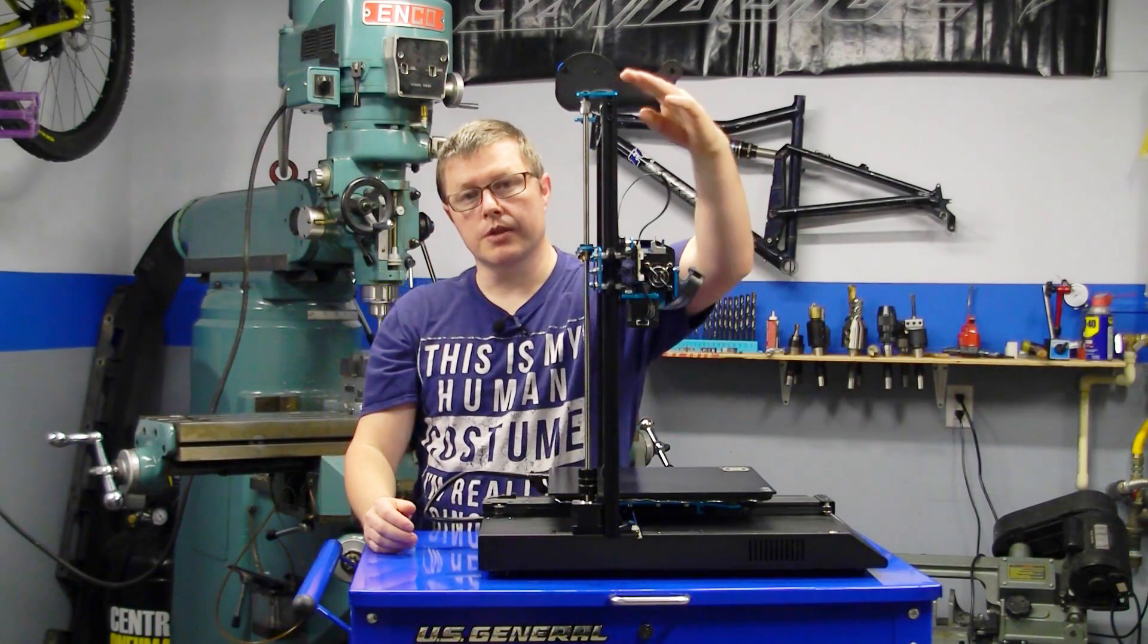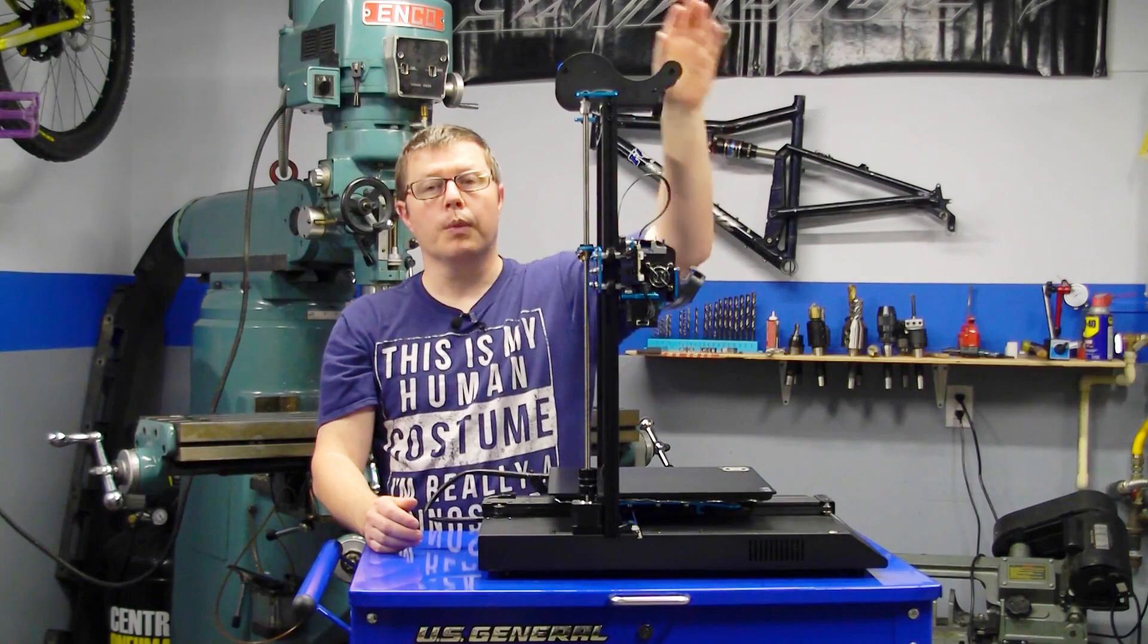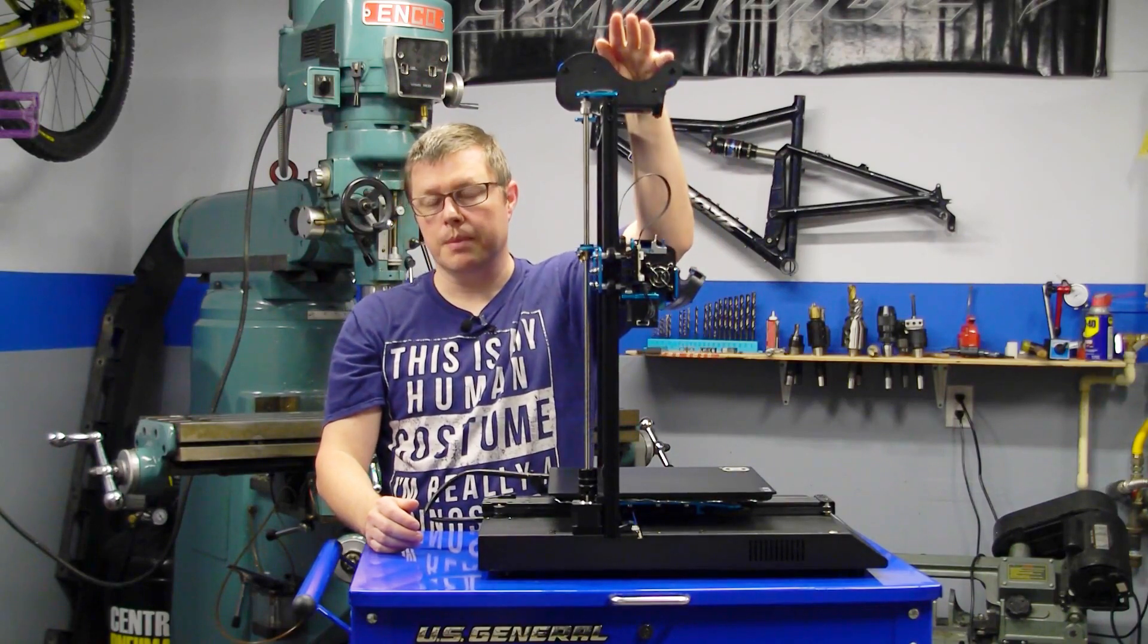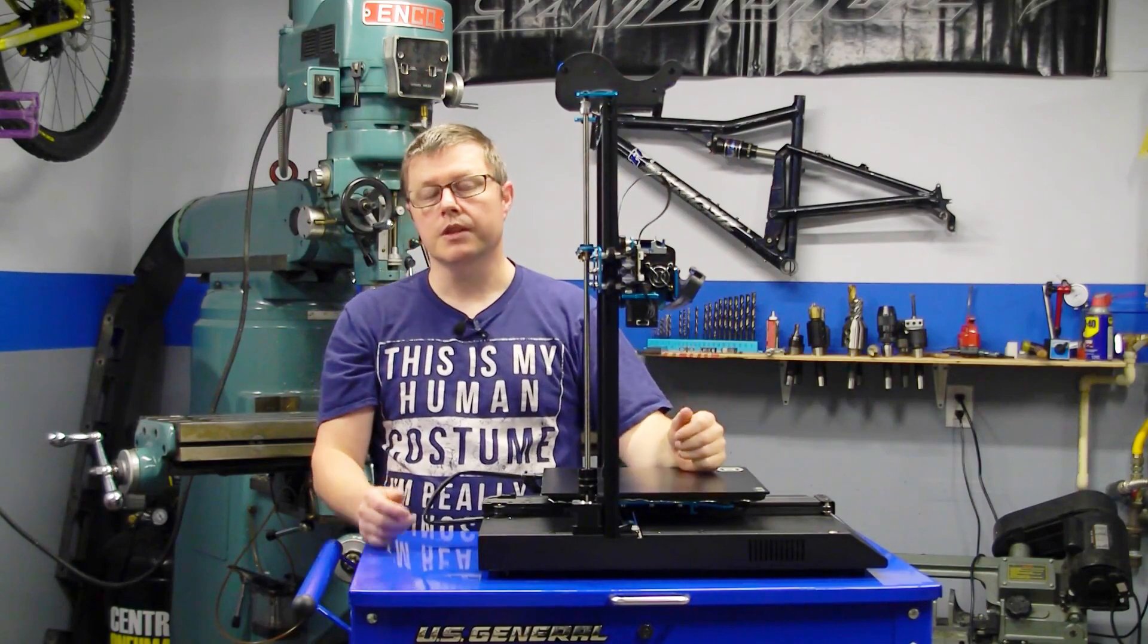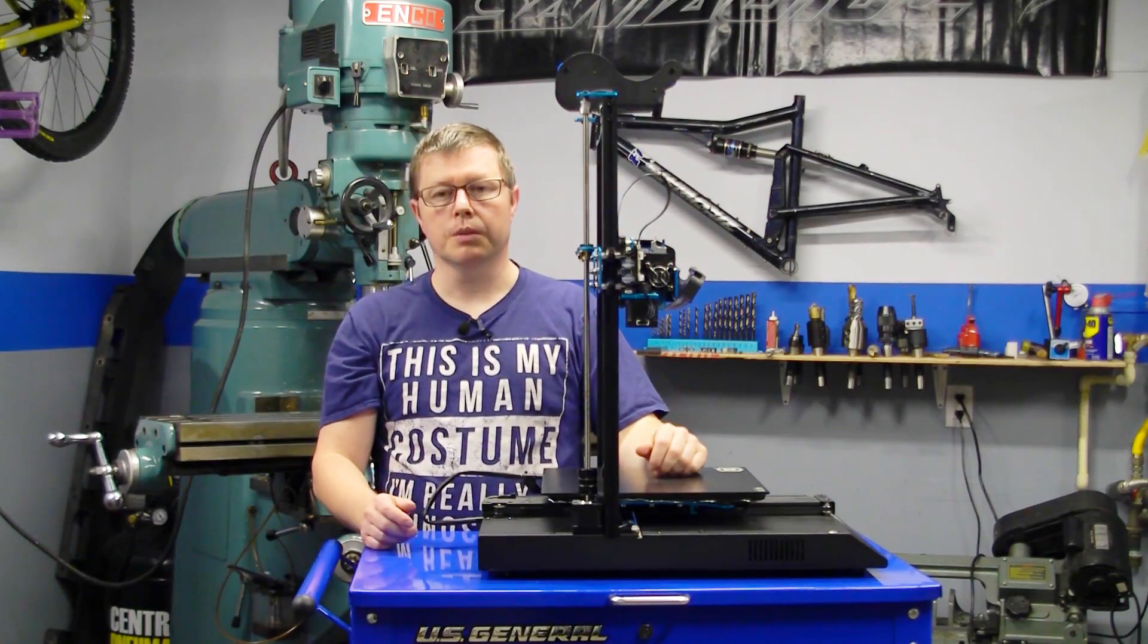Because of the height of the gantry, the weight of the direct drive extruder, and the weight of the roll of filament that sits on top, when this thing really gets moving, the gantry tends to wobble back and forth. This can affect your print quality, especially on taller prints.